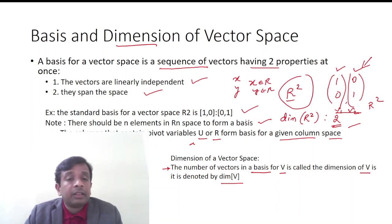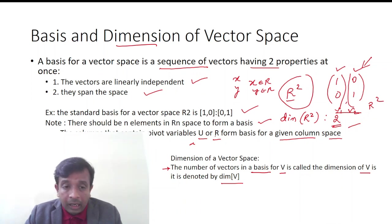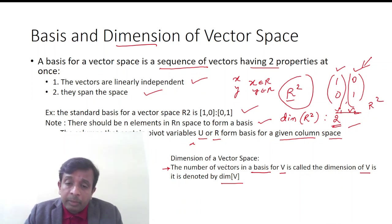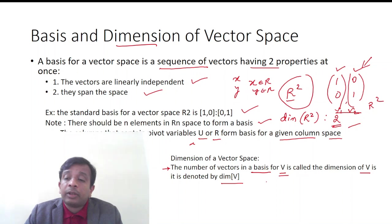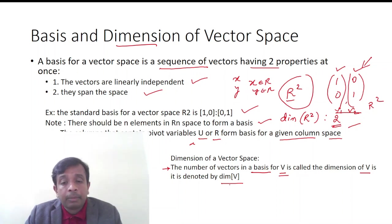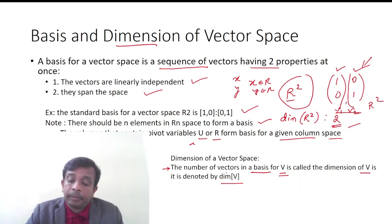Since they span R2 and are linearly independent, they form the basis for vector space R2. The dimension of a vector space is the number of vectors in a basis for V, and it is denoted by dim(V).